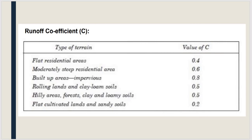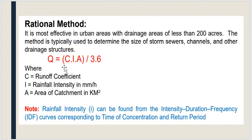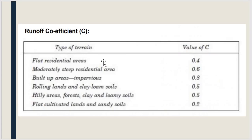In the rational method formula Q = CIA / 3.6, after finding I using IDF curves, we find C, the runoff coefficient. The runoff coefficient is found using a tabular column based on terrain type. For example, for a flat residential area, C = 0.4. Corresponding values for other terrain types can be read from the table.